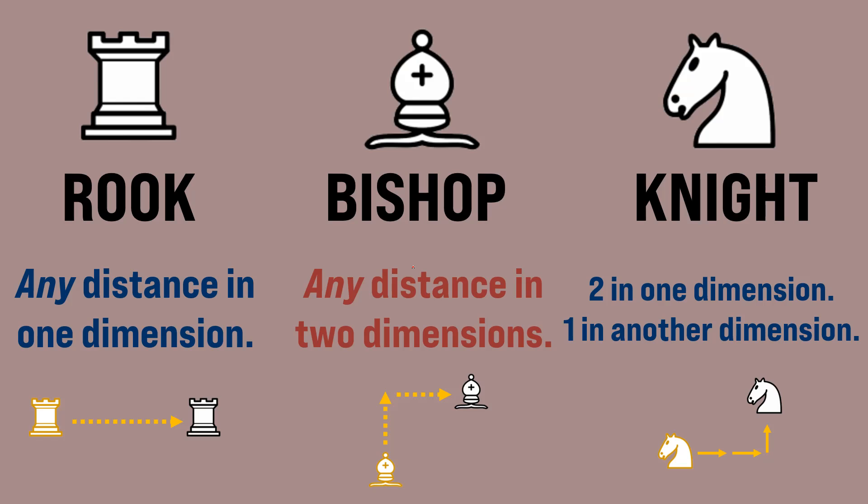The bishop moves any distance in two dimensions, but it has to be the same distance in both dimensions. In 2D chess, you might think of this as diagonal movement, but really what it's doing is moving a certain distance in one dimension, and the same distance in another.